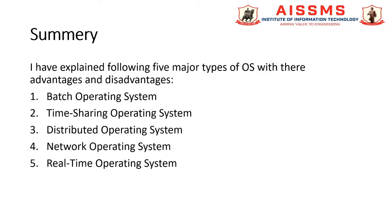To summarize, in this video I have explained five major types of operating system with their advantages and disadvantages: batch operating system, time-sharing operating system, distributed operating system, network operating system, and real-time operating system.